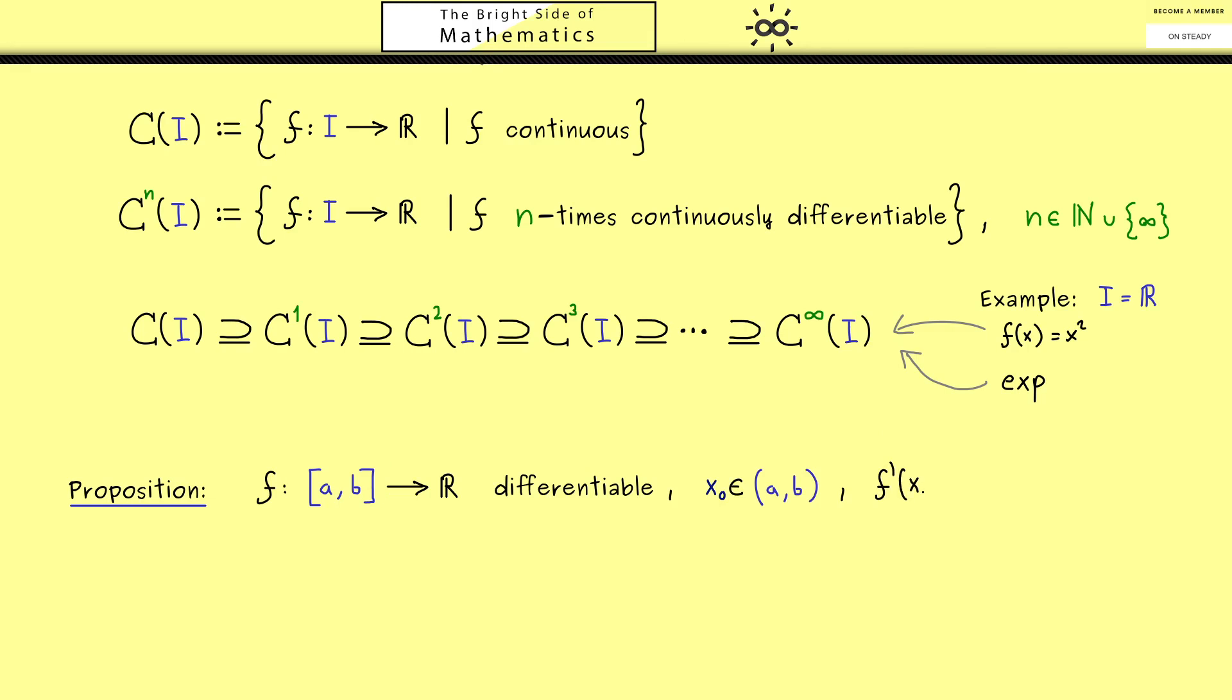Namely we have proven that the local extremum at x0 implies that f' of x0 is 0. In other words if the derivative does not vanish we cannot have a local maximum or minimum at the point x0. For this reason we need to use this property as an assumption. However then we are also able to use the boundary points of the interval. Now only one assumption is missing here, we also need the second derivative at the point x0.